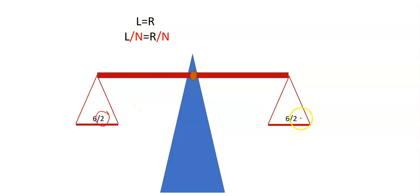But we want to keep it balanced. So if you divide the left-hand side by 2, you must divide the right-hand side by 2. So I use the balanced scales to explain those four points.